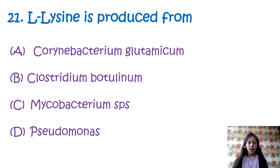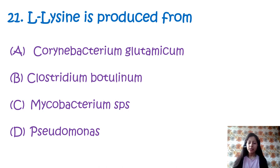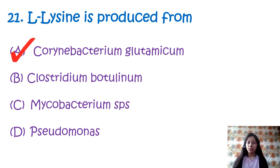Question 21: L-lysine is produced from — option A: Corynebacterium glutamicum, option B: Clostridium botulinum, option C: Mycobacterium species, option D: Pseudomonas. L-lysine is mainly produced by submerged fermentation, mainly by Corynebacterium glutamicum and E. coli. There are two types of fermentation methods used industrially: indirect fermentation and direct fermentation. The correct option is A.